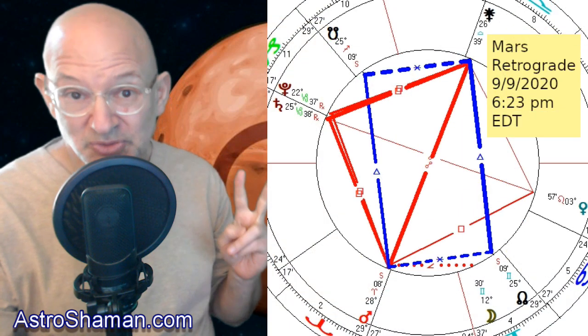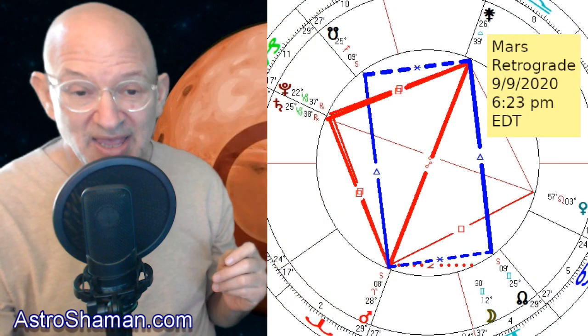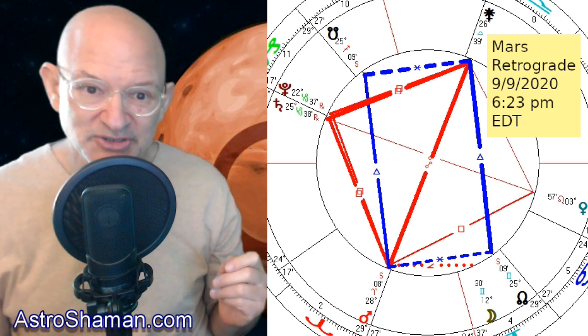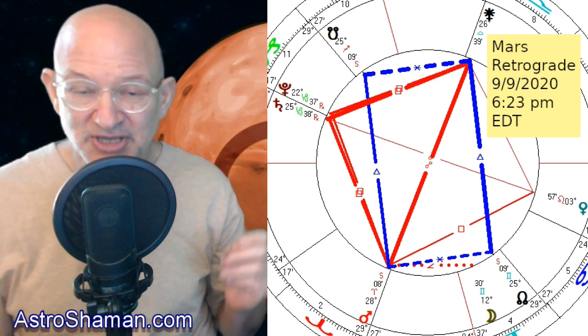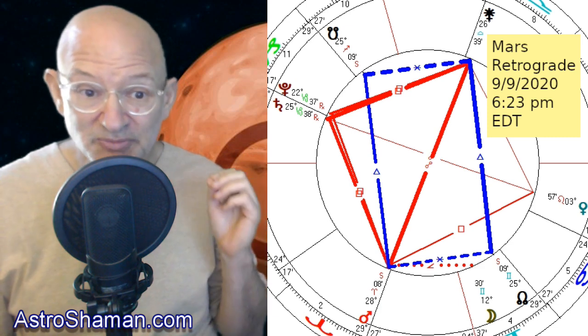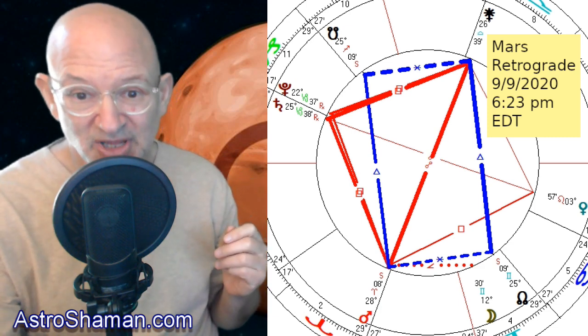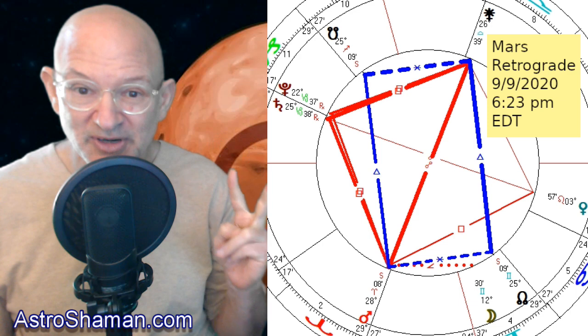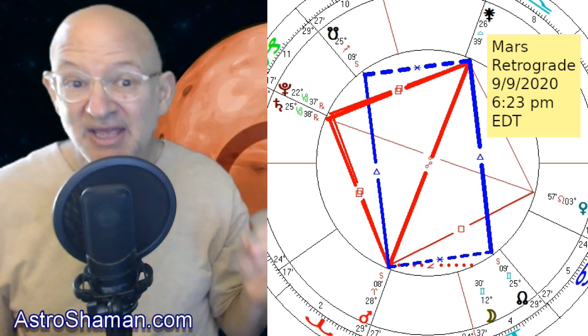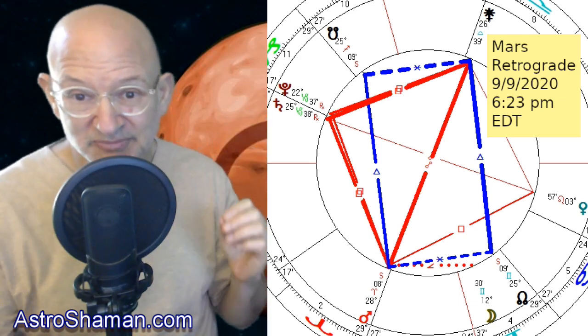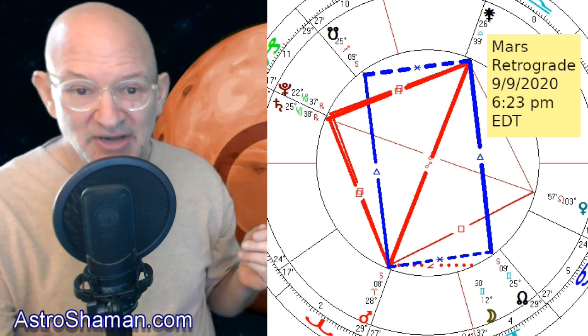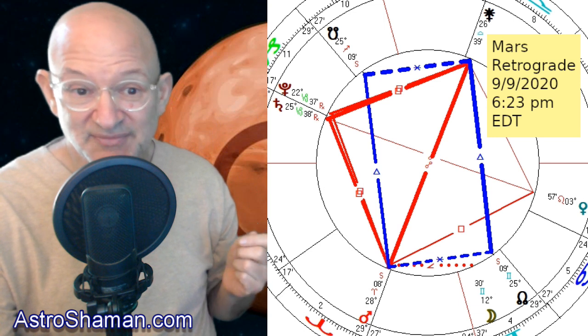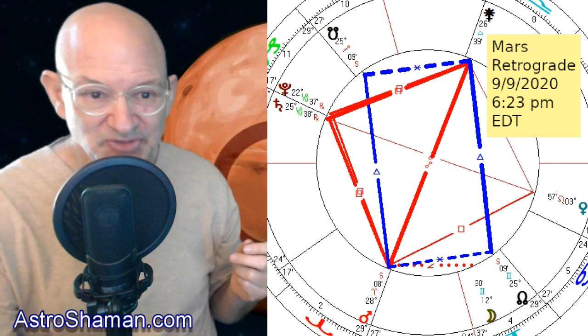The aspects a planet makes as it turns retrograde add additional meaning to its retrograde period. This Mars retrograde includes two aspect patterns, a t-square and a mystic rectangle. The t-square is the most important Mars retrograde aspect pattern. It includes a Mars-Juno opposition with both planets squaring Saturn and Pluto. I've written about this t-square before. Technically, it could be thought of as two different t-squares, Mars-Juno-Saturn and Mars-Juno-Pluto. Here's the relevant excerpt edited for context from my August 7 forecast entry, which was titled 75 Days of Committed Partnership t-squares. Here's the quote.